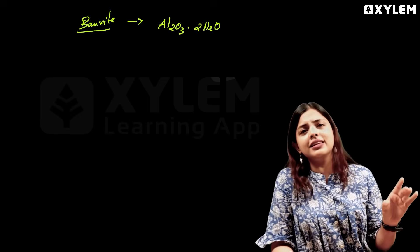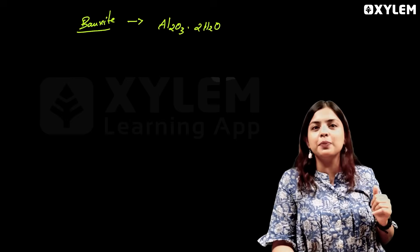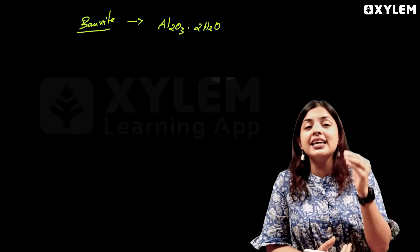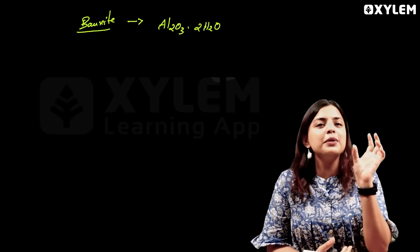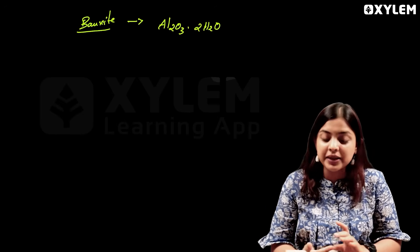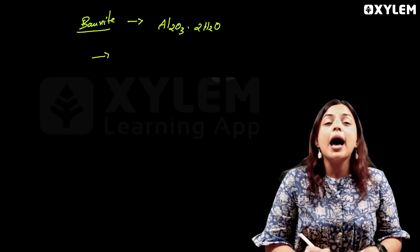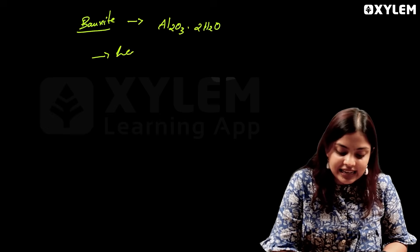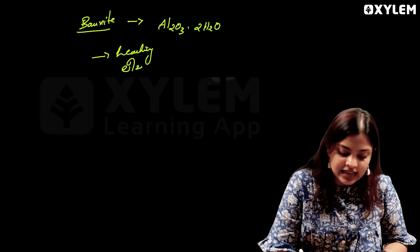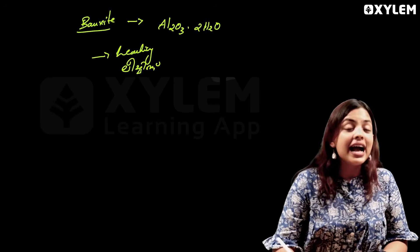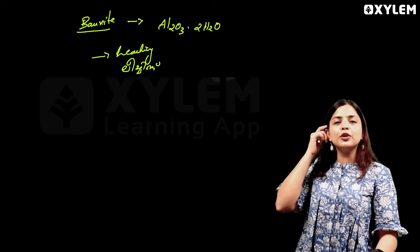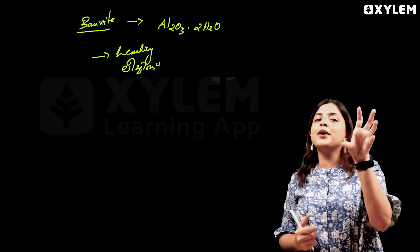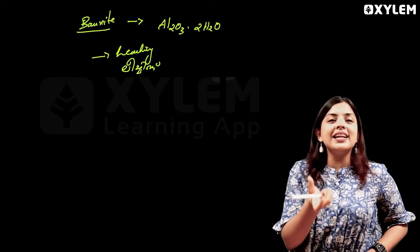If you take bauxite, we will purify it in 3 steps. The first step is concentration. The concentration of bauxite is leaching. Now, how do we leach it? What is a suitable solvent? That's what we use to dissolve it.